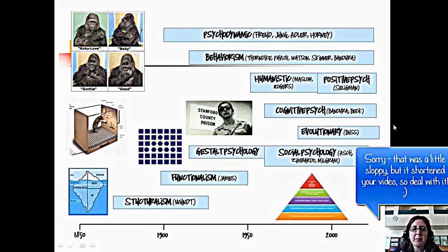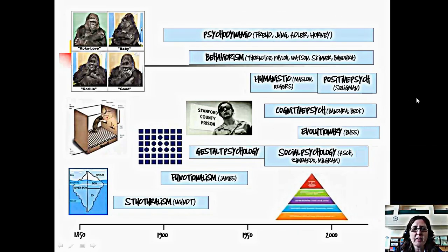The timeline for you shows when these things took place: back here, structuralism and functionalism at the very beginning of psychology, then Gestalt psychology, and then you can see where the psychodynamic approach came in around 1900, followed by behaviorism, the humanistic approach, cognitive psychology, and so on.